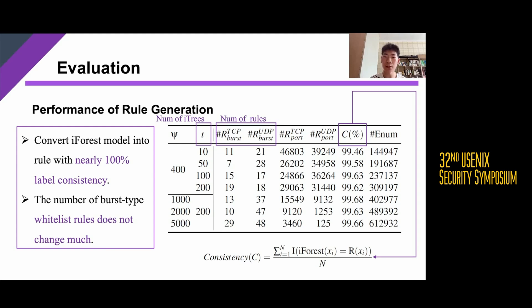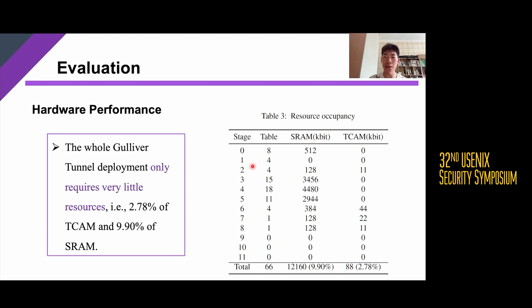Now let's look at the experimental results. First is the performance of rule generation. In this table, T is the number of isolation trees in iForest, and the two columns show the number of burst rules for TCP and UDP respectively. C is the consistency rate, which measures the fidelity of our rule generation algorithm. Regardless of the increase in iForest tree numbers, our rule generation converts the iForest model to rules with nearly 100% label consistency. Furthermore, as the tree and subsampling size increase, the number of burst whitelist rules does not change much. The hardware performance table shows the occupancy rate of SRAM and TCAM on the switch when Gulliver Tunnel is deployed — only 2.78% of TCAM and 9.9% of SRAM.